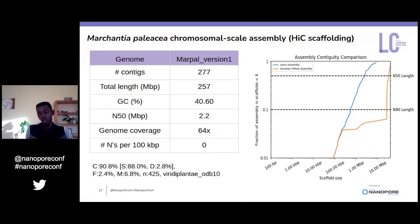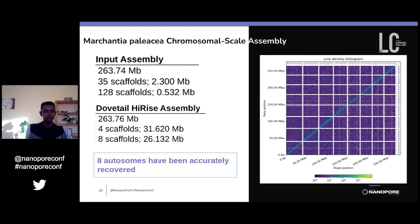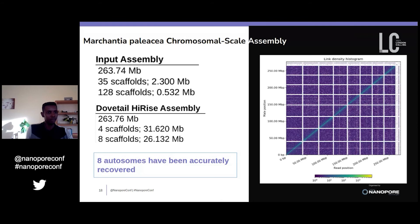Next, we upgraded our genome to the chromosomal scale. By doing so we could dramatically improve the N50, and by checking the linkage density diagram we can clearly see the different contigs that have been accurately assembled into eight scaffolds, each with a length of around 30 megabase pairs. We believe these eight scaffolds correspond to the chromosomes of Marchantia palatia.